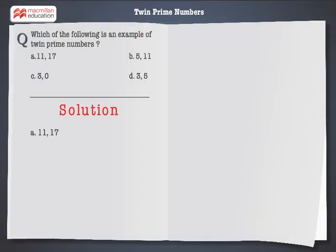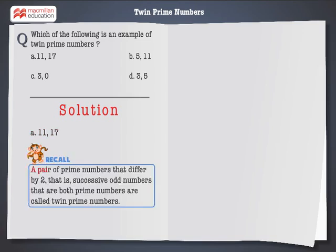Let's solve the first problem. For 11 and 17, let's recall that a pair of prime numbers that differ by 2, that is, successive odd numbers that are both prime numbers, are called twin prime numbers.